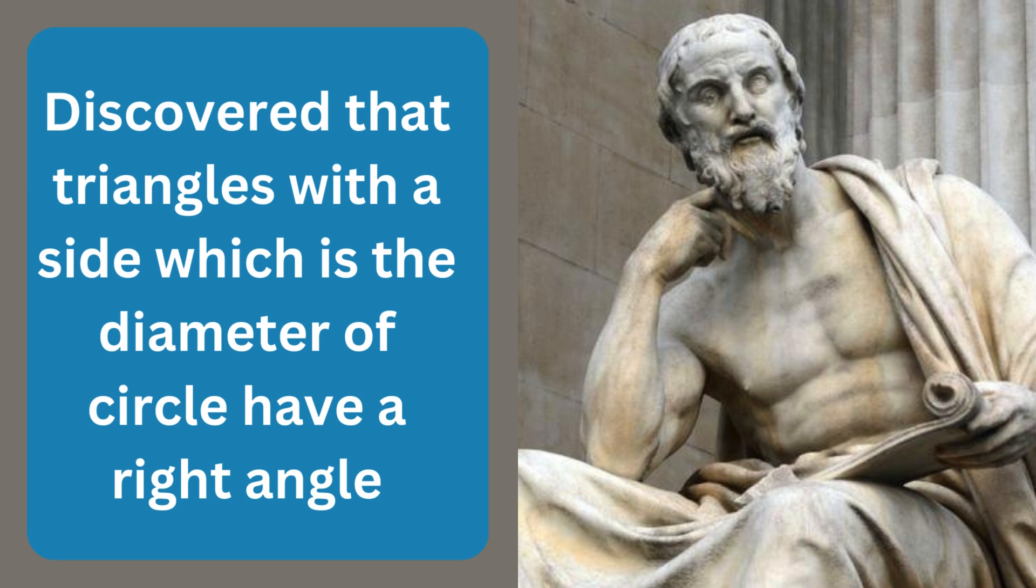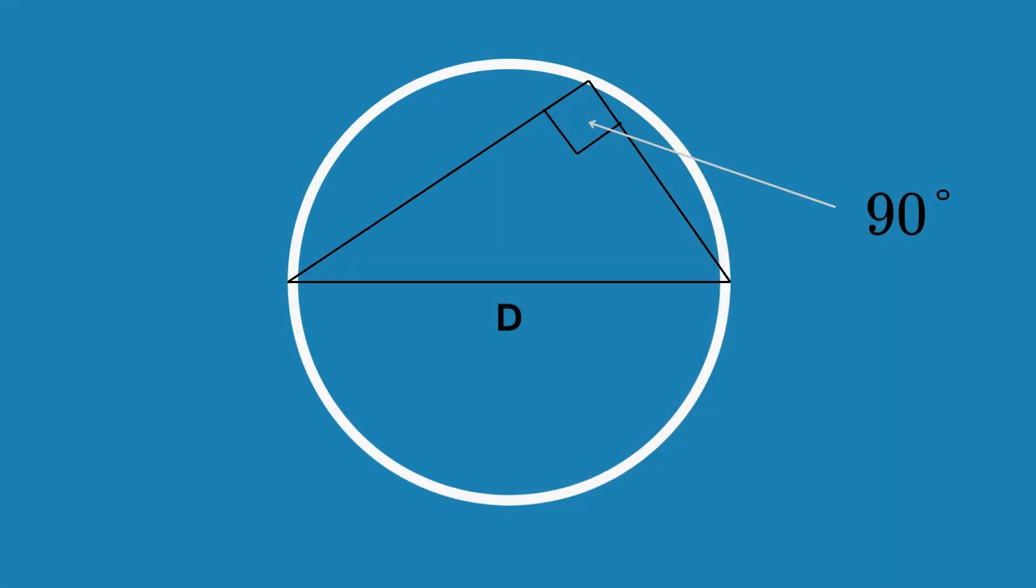Thales of Miletus discovered that if you draw a triangle with all corners touching a circle and one side which goes through the centre of the circle, it will always be a right triangle with a 90 degree angle.